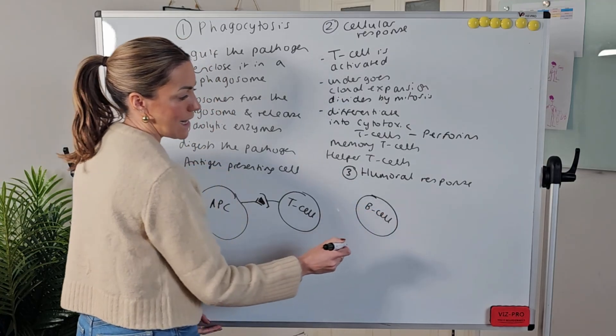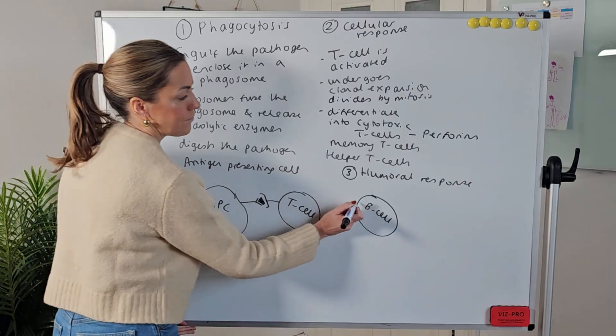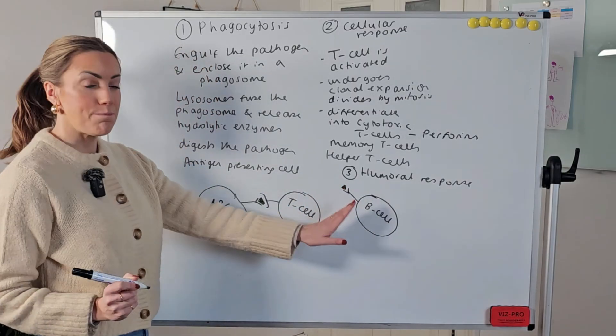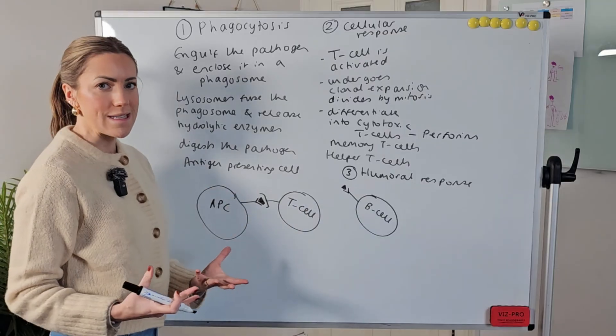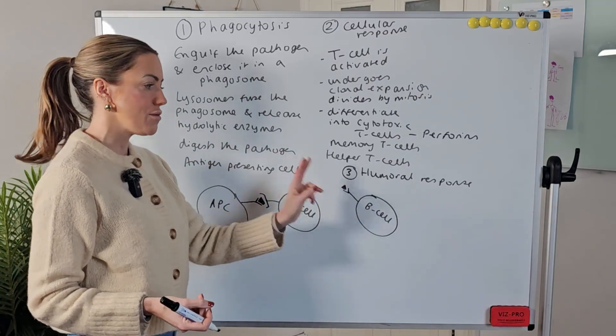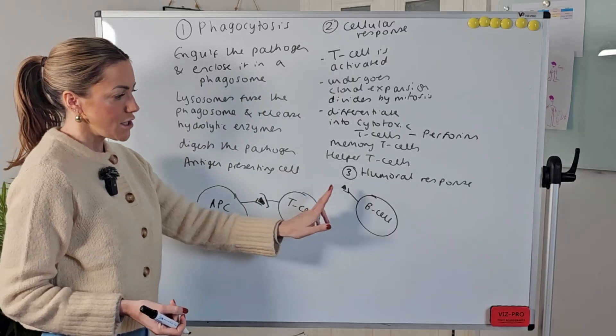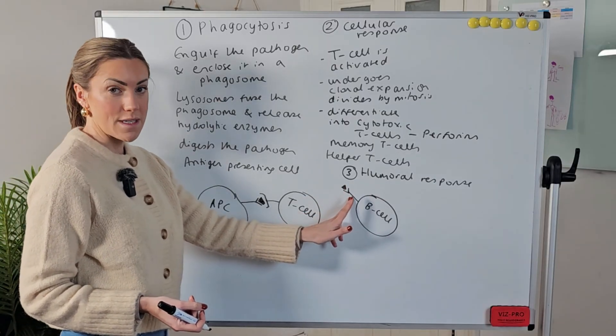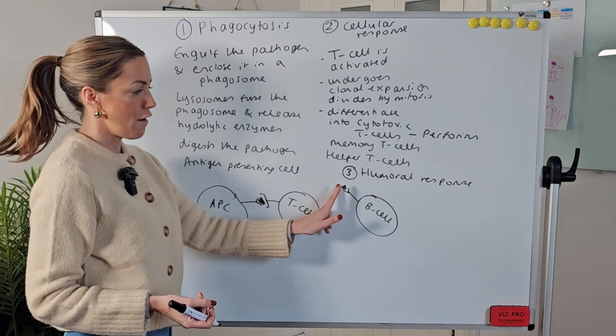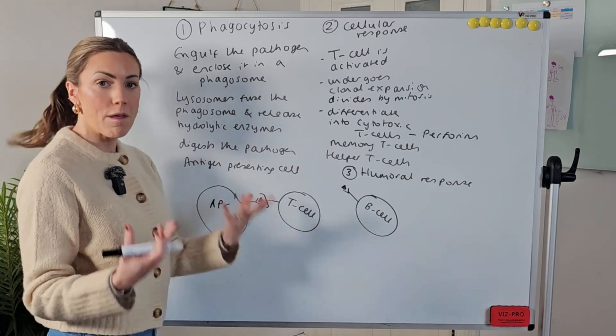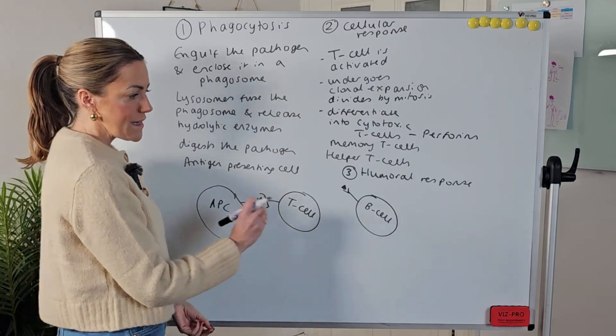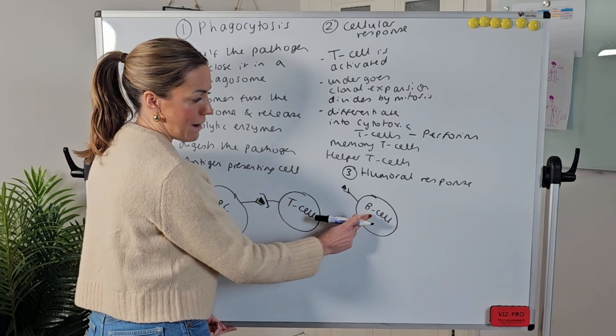So B cells are going to bind to the antigen and again this is specific right because B cells it's not just any old B cell it's the B cell that has the receptors that are specifically complementary to this particular antigen. So B cells with specific receptors on their cell surface membrane are going to bind to the foreign antigen which might be on the pathogen itself or it might be on an antigen presenting cell.